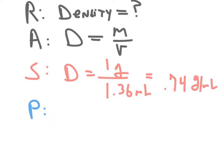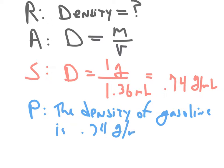So, to paraphrase, the density of gasoline is 0.74 grams per milliliter.